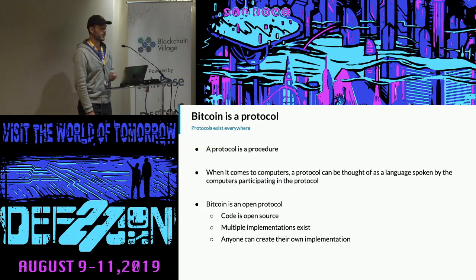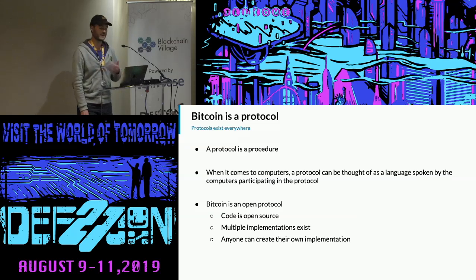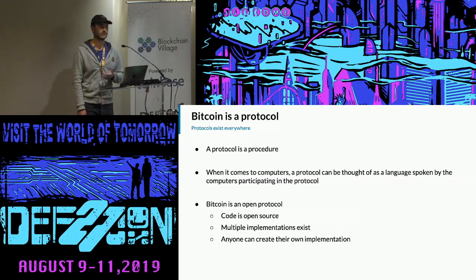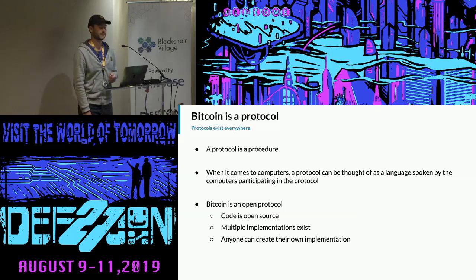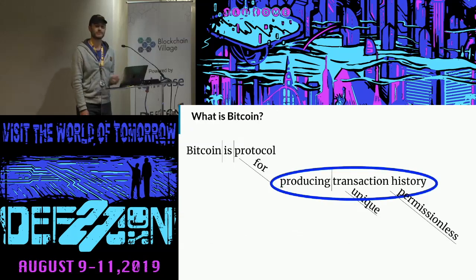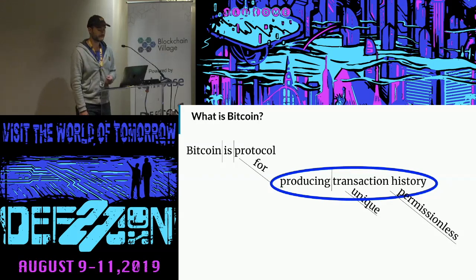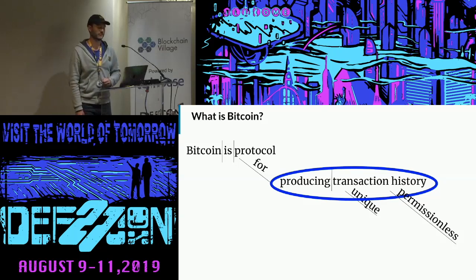Bitcoin is an open protocol. That means everyone knows the protocol — it's not hidden. The code is open source. Multiple implementations of this protocol exist, so many people have written code that conforms with this protocol, and anyone can create their own implementation because of that. So Bitcoin is a protocol — a set of rules, a system. What does the protocol do? It produces a transaction history.